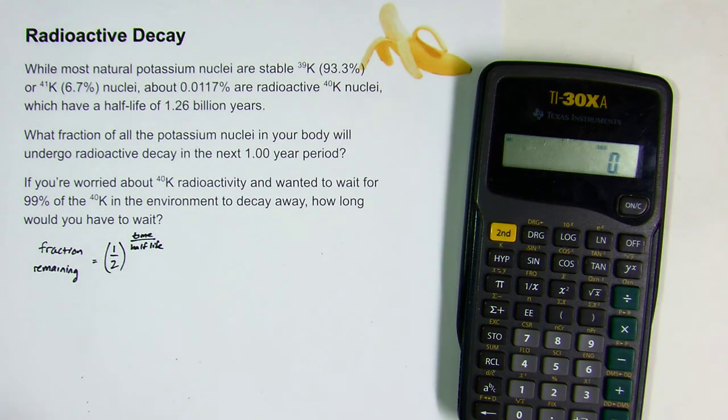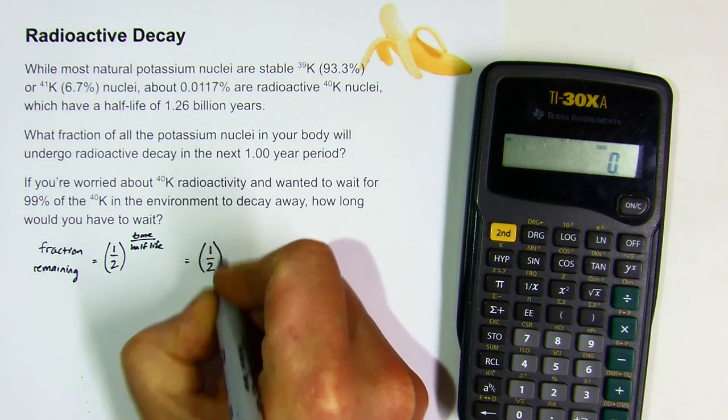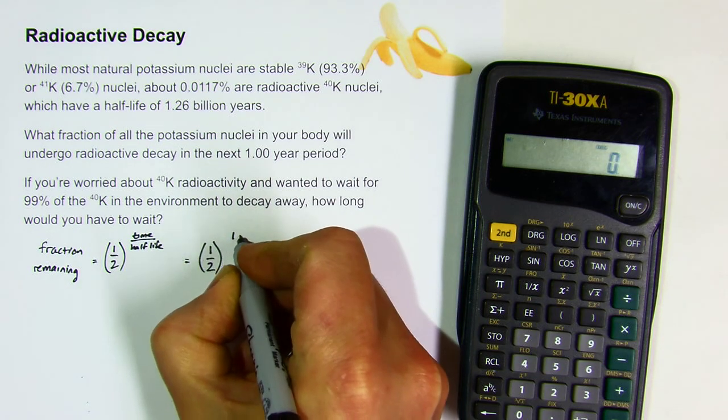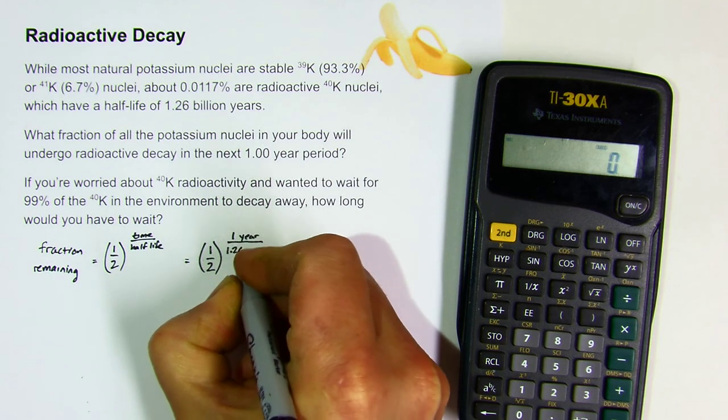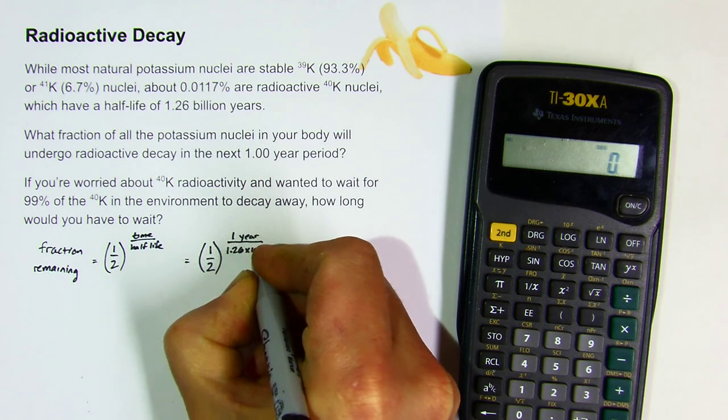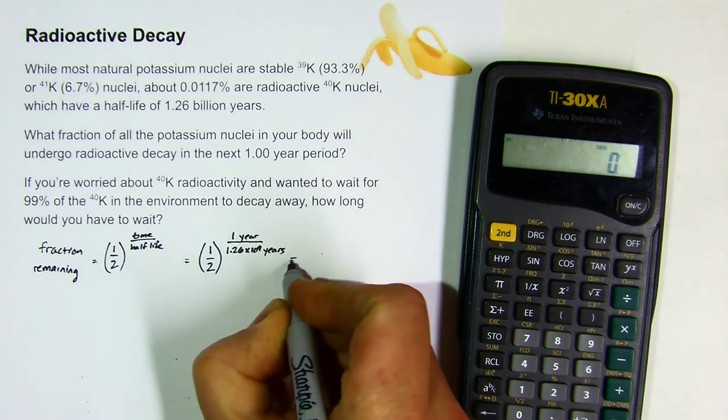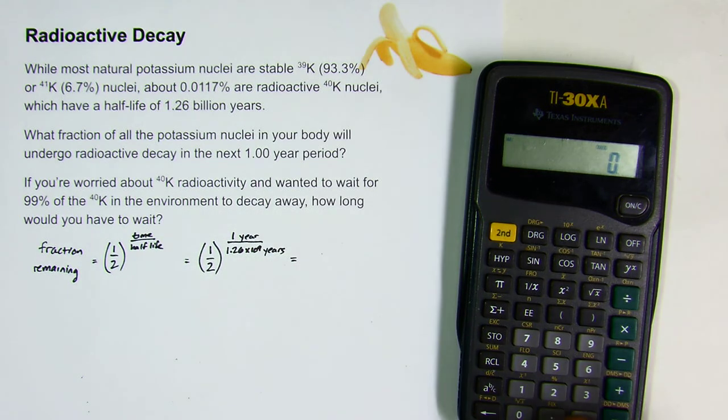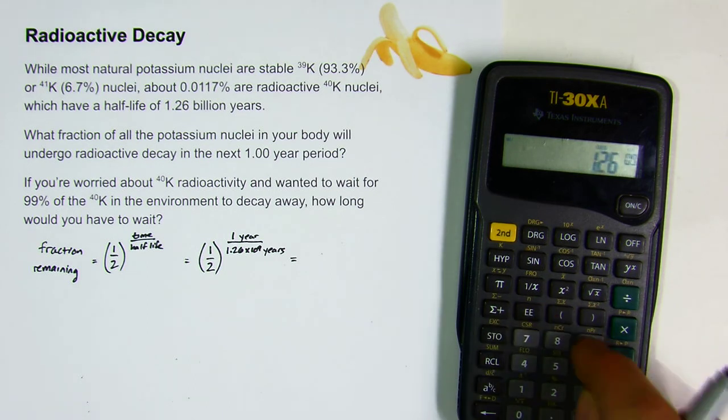So if we solve the one year question, that's going to be one-half to the one year over 1.26 billion, so that's 1.26 times 10 to the ninth years. And if you calculate that out, 0.5 to the power of 1 divided by 1.26 times 10 to the ninth,